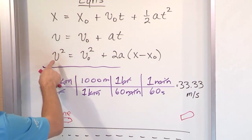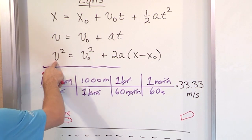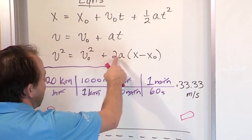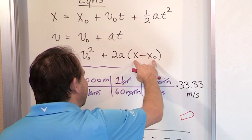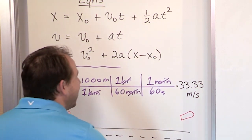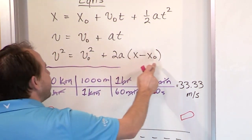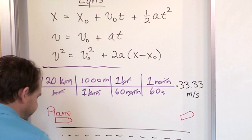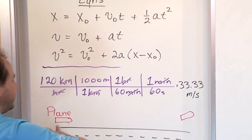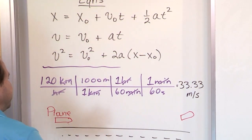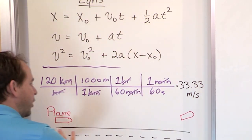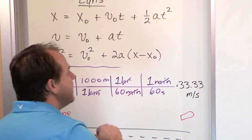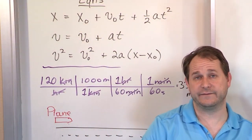Then I look at the third equation. I know the final velocity, the initial velocity, and x minus x-naught — the two is just a number. For this equation, I know everything except a. That means I can use the third equation to solve for a. It's difficult to figure out what to do unless you have everything written down — all your variables, all your equations — then you can figure out what makes the most sense. You cannot pick a path forward without writing that stuff down.